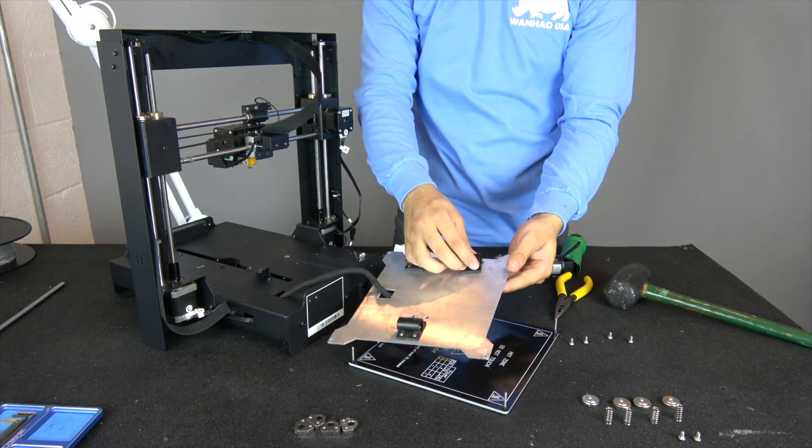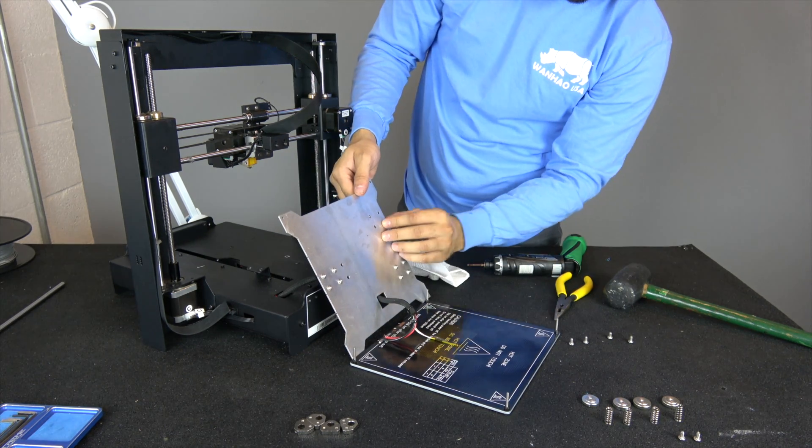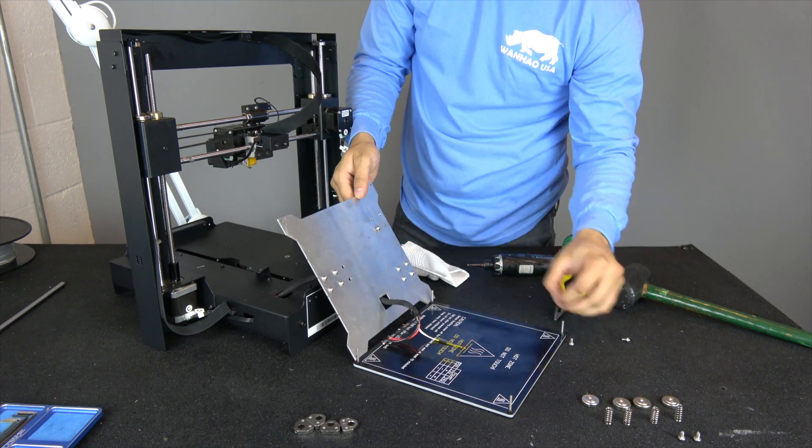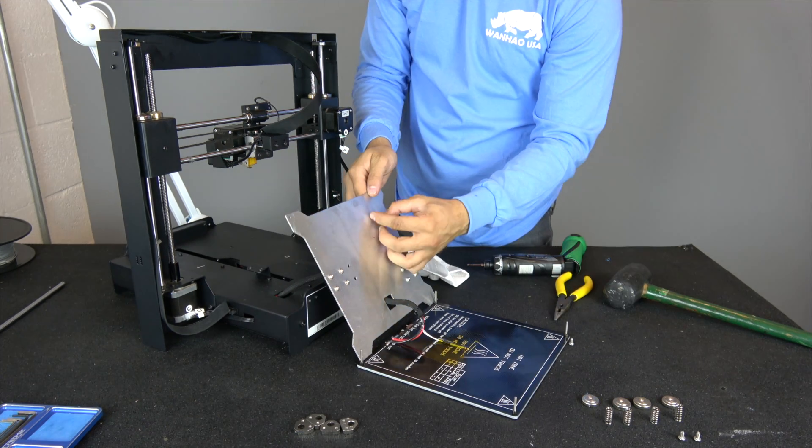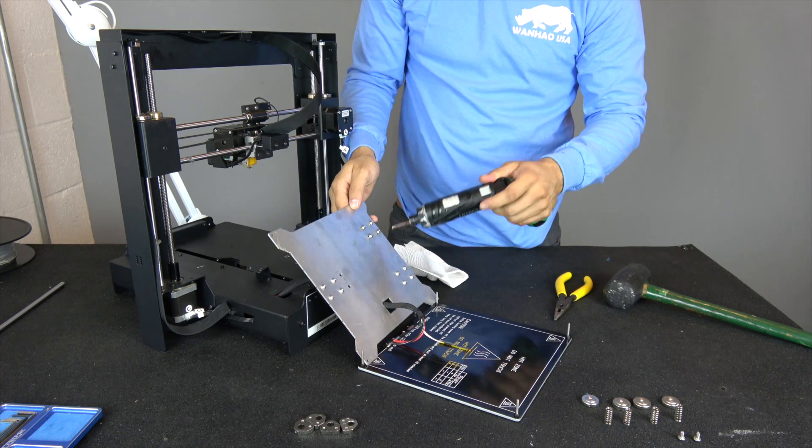Reinstall the screws you removed and secure your bearing back onto the aluminum plate. Repeat this process for each bearing that needs to be replaced.